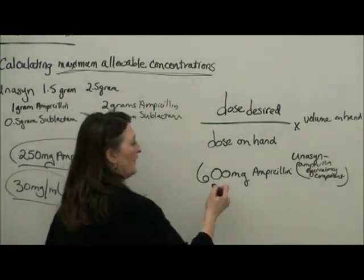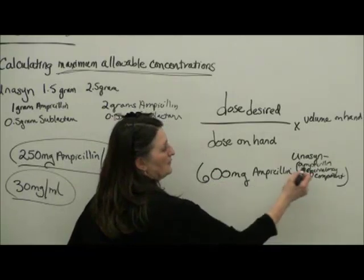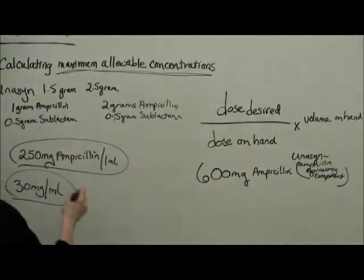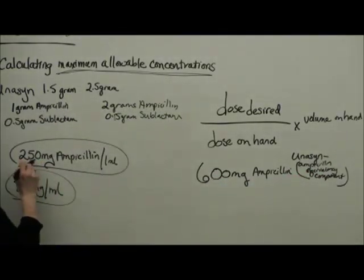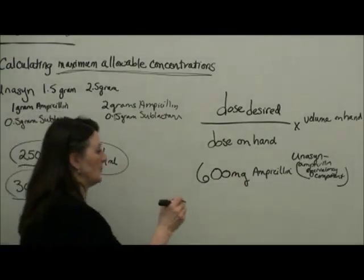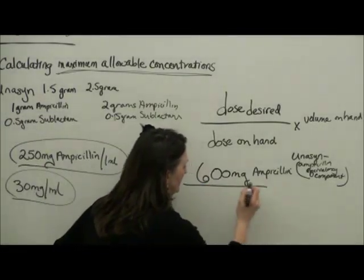So, they are ordering the 600 milligrams of ampicillin, and we know that there is 250 milligrams of ampicillin in milliliter of that Unasyn.